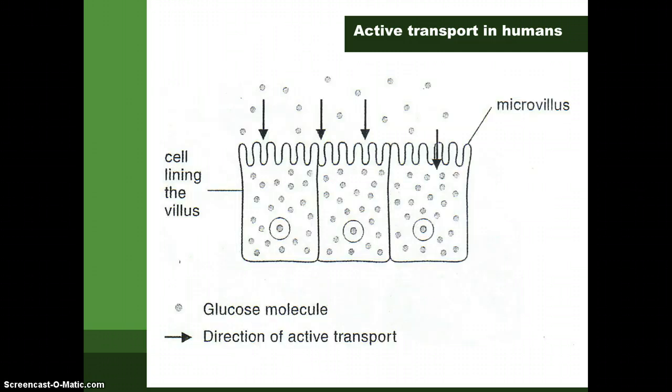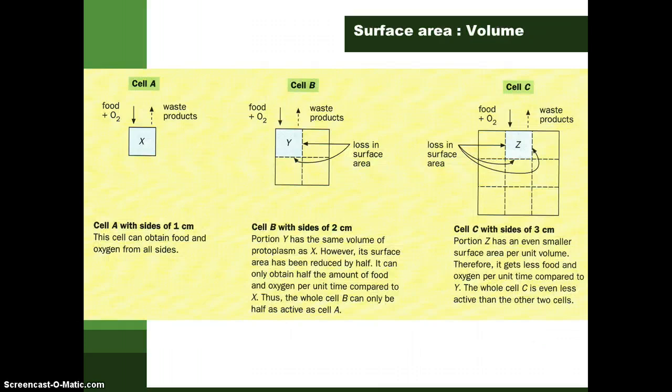Absorption of glucose and amino acids occurs through the inner surface of the small intestine via the villi. Diffusion alone is not fast enough, so active transport is needed to absorb all the glucose and amino acids into the bloodstream quickly.